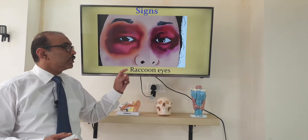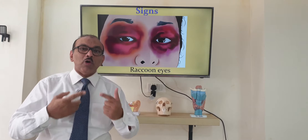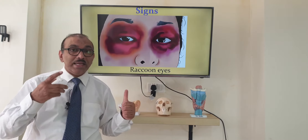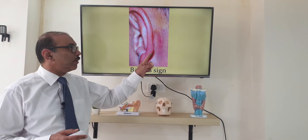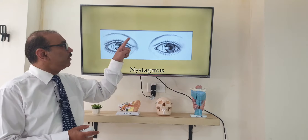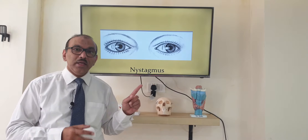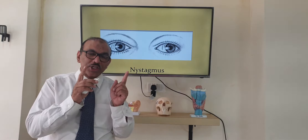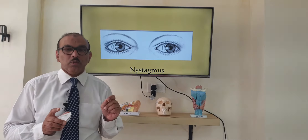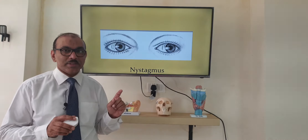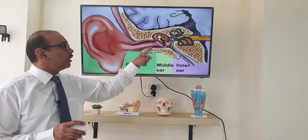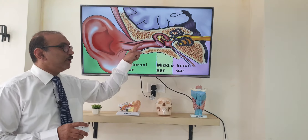On examination of the patient, sometimes both eyes will be reddish in colour, as seen in this picture. This indicates there is an anterior skull base fracture. Likewise, if you see a discoloration behind the ear, that also indicates a skull base fracture. On examination of the eye, you can see the eyeball moving in one particular direction continuously, which means the inner ear — the labyrinth — is involved. This is called nystagmus. On examination of the ear canal, if there is a fracture, there will be a step deformity.